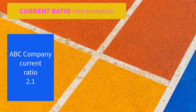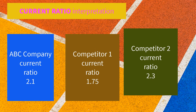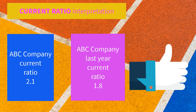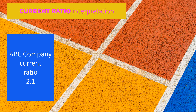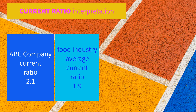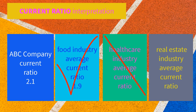Financial ratios like current ratio will be interpreted in the context of other information. Financial ratios of the firm are compared with those of its major competitors and to the company's prior periods. They should also be compared with company goals and industry averages. For example, if ABC Company belongs to the food industry, we compare its current ratio with the food industry average, not with other industries.